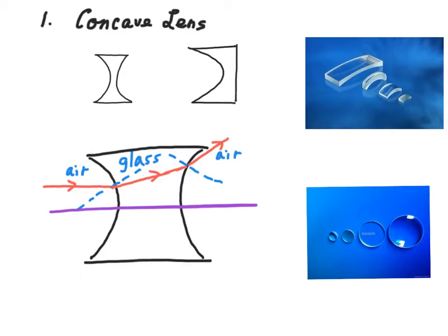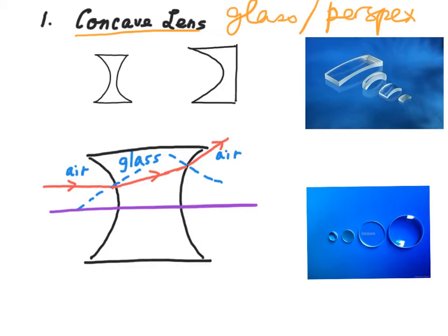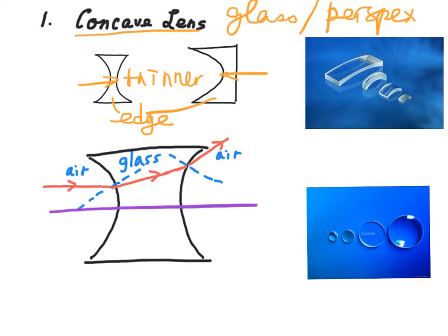The first kind of lens we are going to study is concave lens. A concave lens is usually made of glass or made of perspex. For a concave lens, the middle of the lens is thinner than that of the edge. This kind of lens is called a concave lens.